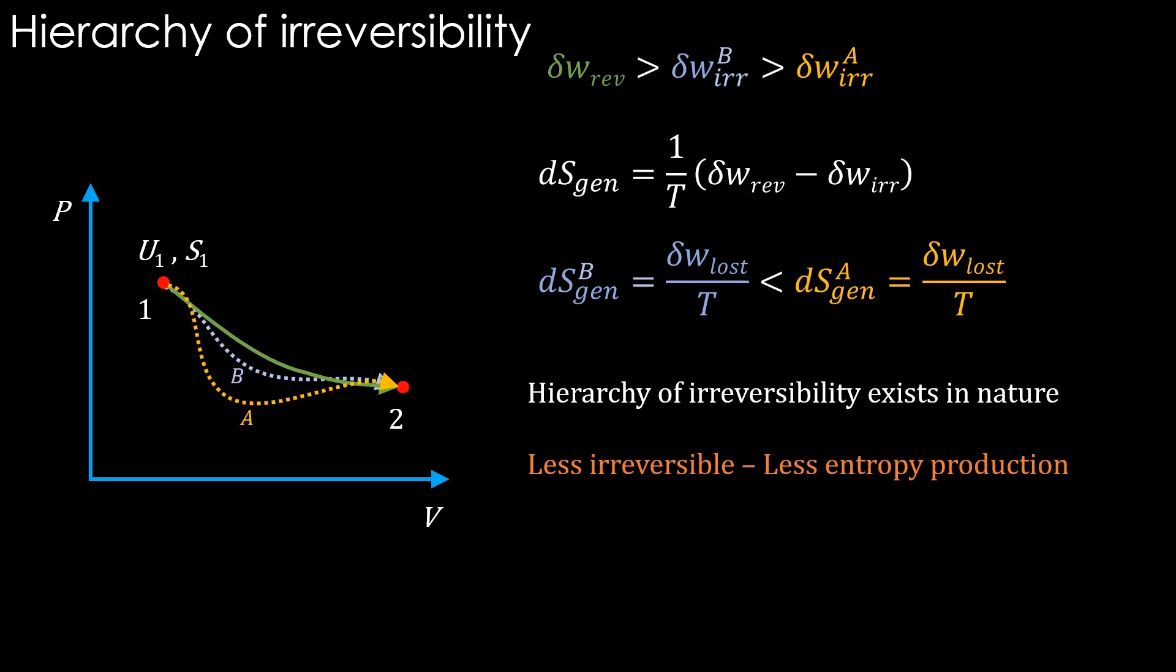If a process is less irreversible, then the entropy production is also less. But it is never zero as long as it is an irreversible process. Only for reversible process it is zero.